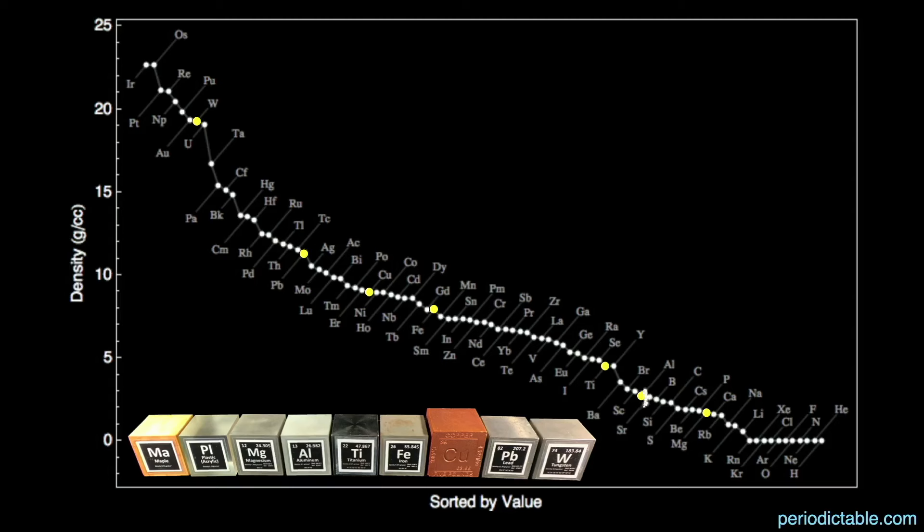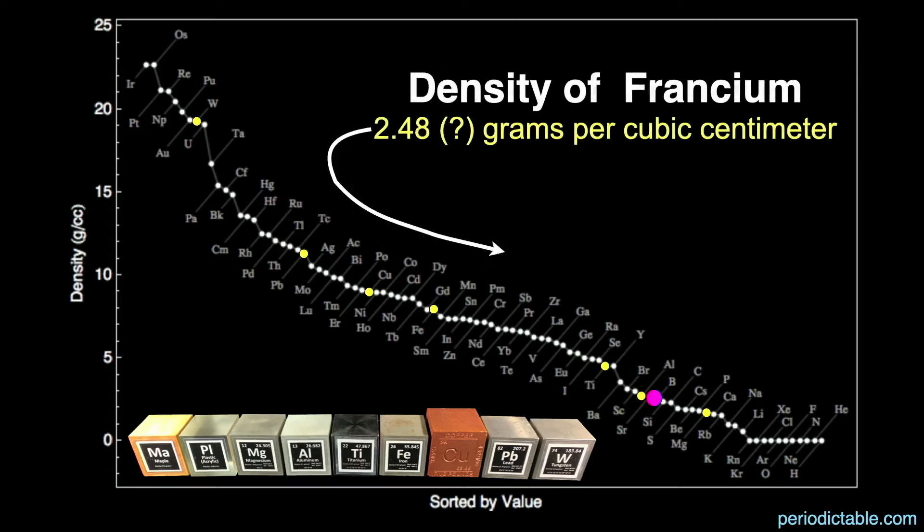I also have plastic and wood blocks, but those are not technically elements. Again, francium's density is currently unknown, but the guess of 2.48 grams per cubic centimeter places it near the density of aluminum. We'll talk about other unknown properties a bit later. It's the most dense of the alkali metals, which I've labeled here in blue. It's not practical or possible to own a block of francium. I'll use the block of aluminum just to substitute.